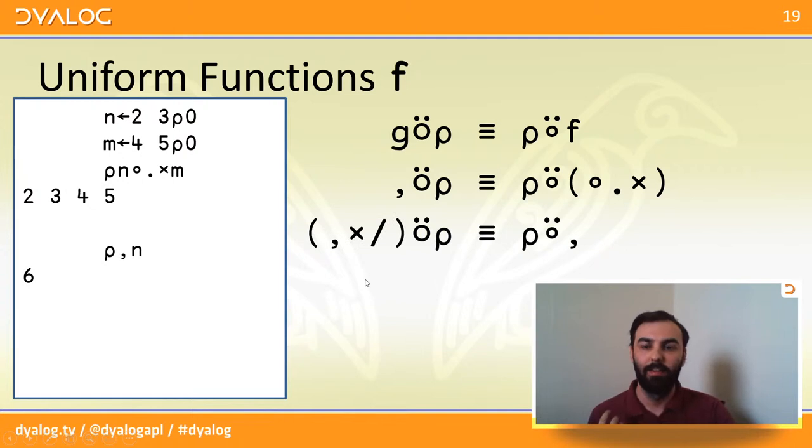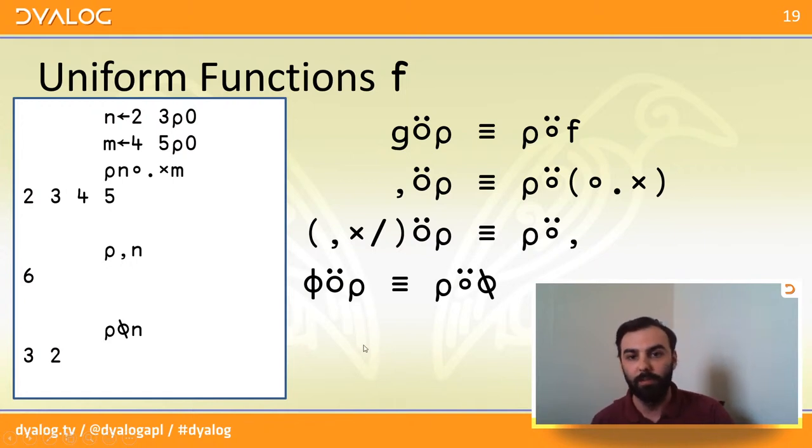If f is monadic comma, or ravel, then the shape of the result is the ravel of the product of the shape of the argument. It could be a little neater, but we have to put the ravel here because the result of the shape function is always a vector. Okay, one last example. If f is monadic transpose, then the shape of the result is just the reverse of the shape of the argument.